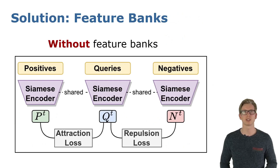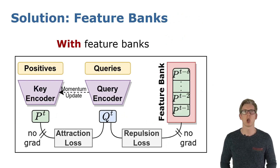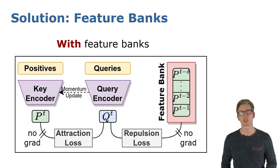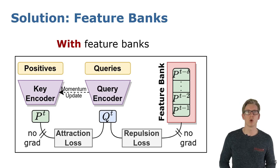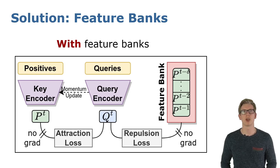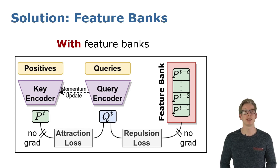Instead of using the classical Siamese network and recomputing the negatives, we use something called a feature bank. We simply buffer the positives from the previous queries in the feature bank, and these descriptors can then be mined for hard negatives of the current query. We now have one network for the queries which gets normally updated with an Adam optimizer, and additionally a second network for the positives which gets only slowly updated with a momentum update. This improves the stability of the training, and the advantage of the feature bank is that we can have a lot of potential negatives at basically no cost.